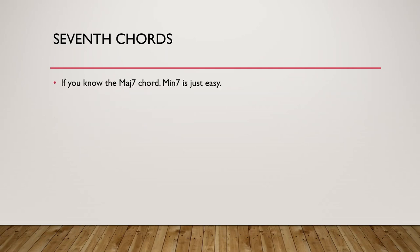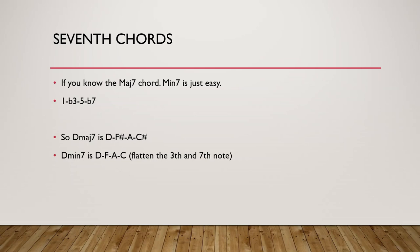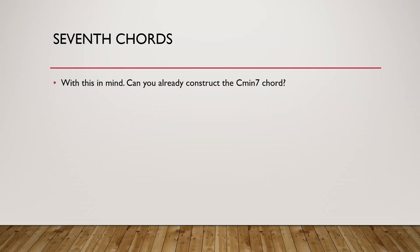If we know major 7, then minor 7 is easy because it is 1, flat 3, 5, flat 7. We make the major 7 and flatten the 3rd and 7th notes. From the last example, D major 7 is D, F sharp, A, C sharp. So D minor 7 will be D, F, A, C — the F sharp is flattened to F natural and the C sharp to C natural. Can you construct C minor 7? C major 7 is C, E, G, B. We flatten the 3rd and 7th: E becomes E flat, B becomes B flat. So C minor 7 is C, E flat, G, B flat.